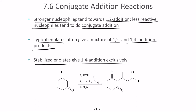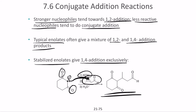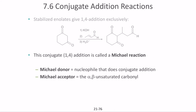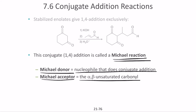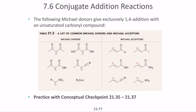When a stabilized enolate with two carbonyl groups uses KOH as the base, the enolate attacks the beta carbon of the alpha-beta unsaturated structure via conjugate addition. This conjugate addition is called the Michael reaction. In the Michael reaction, the Michael donor is the nucleophile performing conjugate addition, and the Michael acceptor is the alpha-beta unsaturated carbonyl. There are various examples of Michael donors and Michael acceptors.